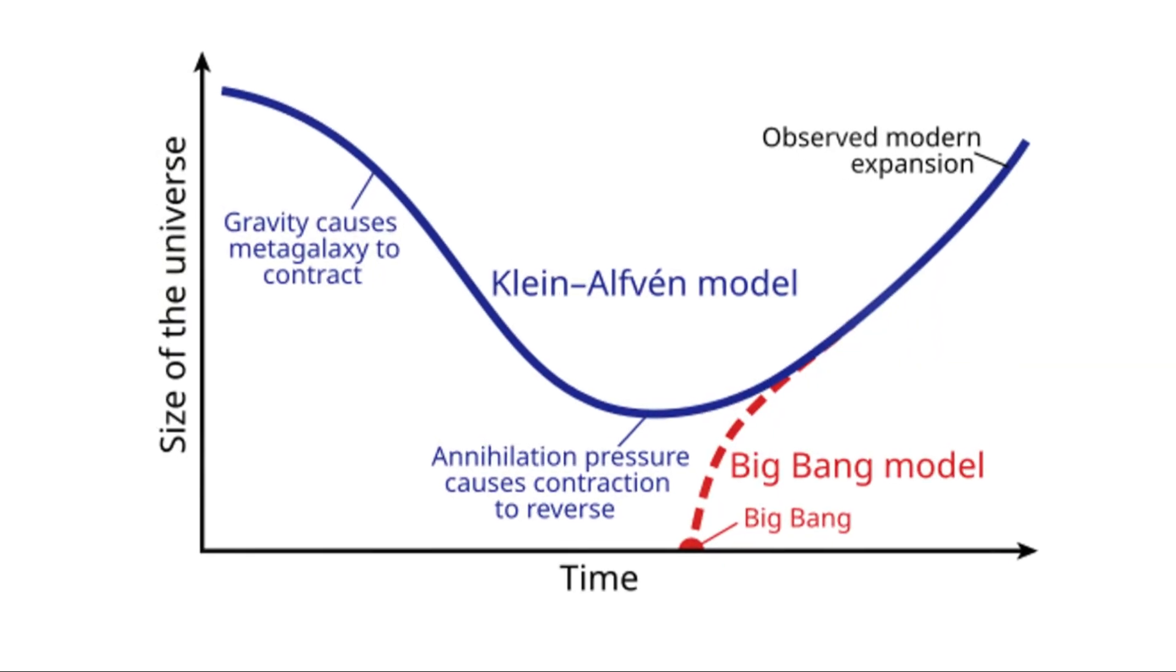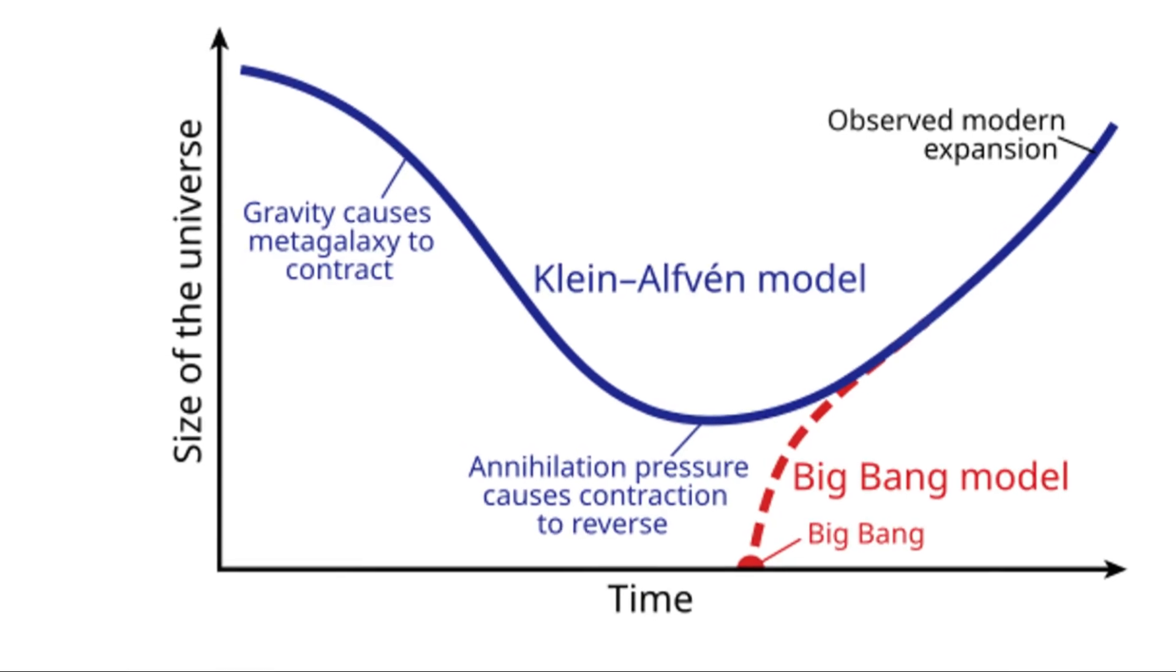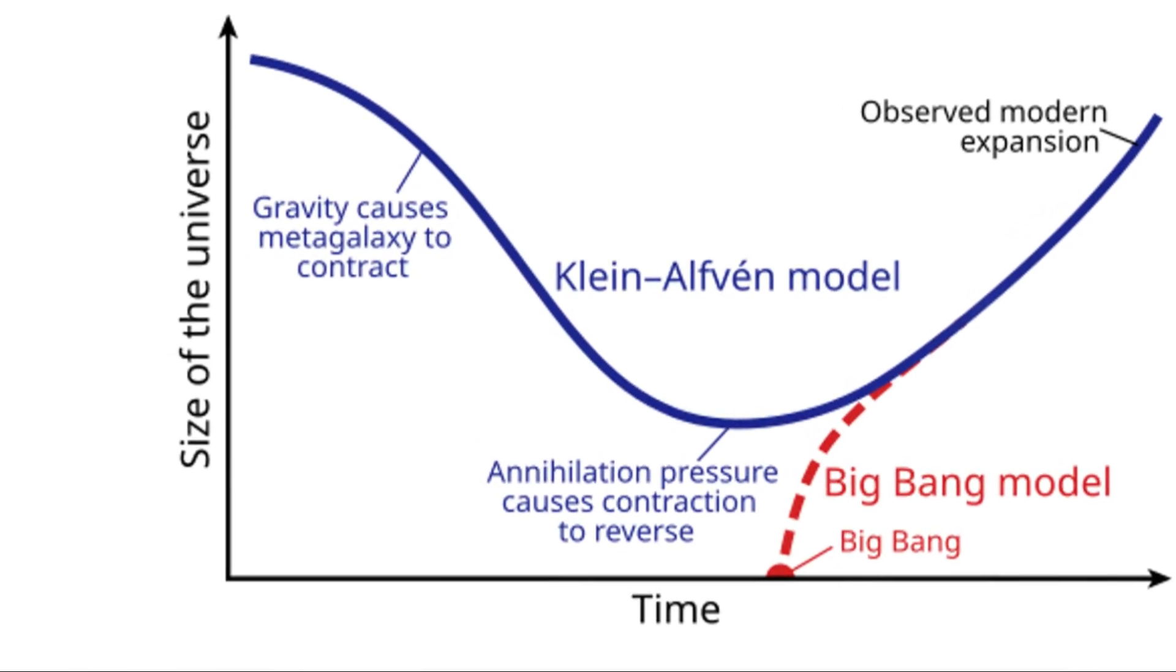One of the most vocal proponents of plasma cosmology was the Nobel laureate Hannes Alfvén, who made significant contributions to the field of plasma physics. He argued that electromagnetic forces, often overlooked in cosmological models, could be the missing piece of the puzzle in our understanding of the universe.